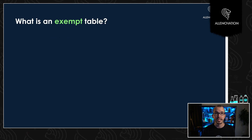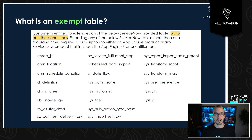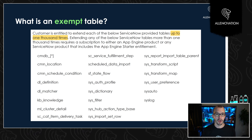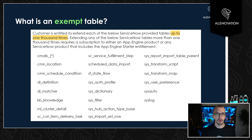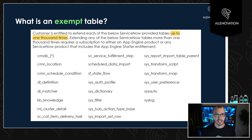There are tables that are exempt, or you can create tables that can become exempt, meaning they don't count as a custom table. An exempt table is any of the tables you see here — you're allowed to extend these tables, meaning you create a new table and in the field where it says 'extends,' you choose one of these tables. Any one of these specific tables can be extended up to 1000 times.